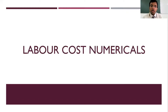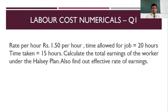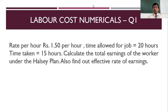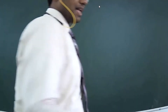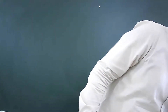As part of this session we will be working on a calculation of labor cost, solving numericals to calculate the labor cost in different scenarios. The first question tells us the rate per hour is 1 rupee 50 paise. The time allowed for a job is 20 hours — that is the standard time — and the time taken is 15 hours. We are asked to calculate the total earnings of the worker under Halsey's Plan.